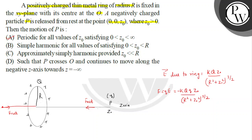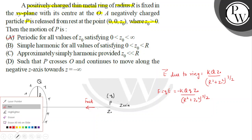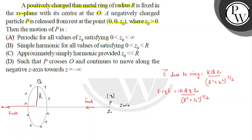We know that for a motion to be SHM, the force must be proportional to −x, and in this case the force should be proportional to −z₀.